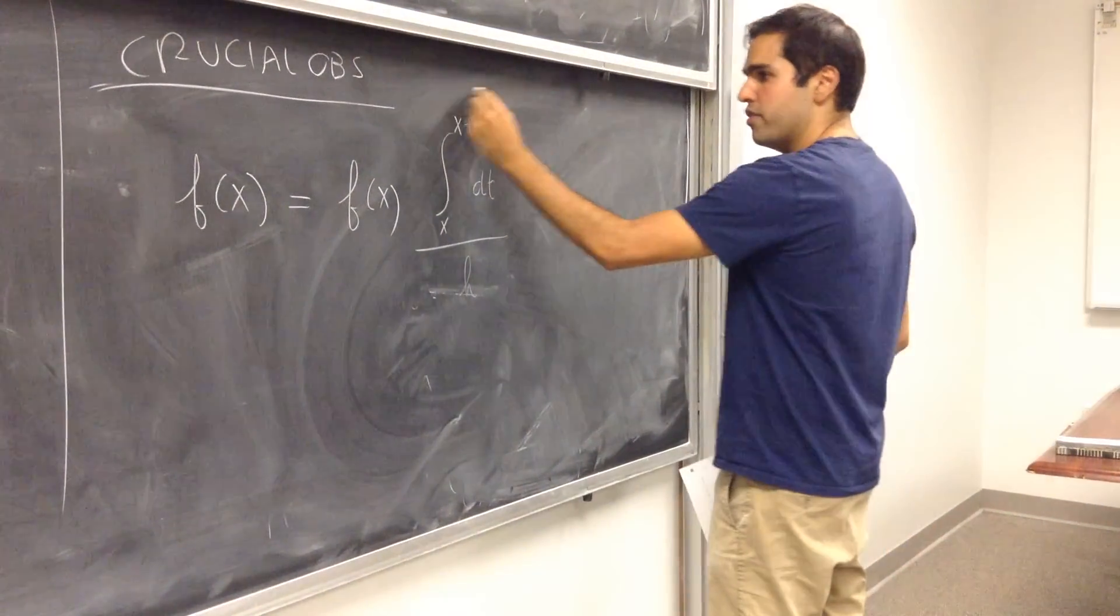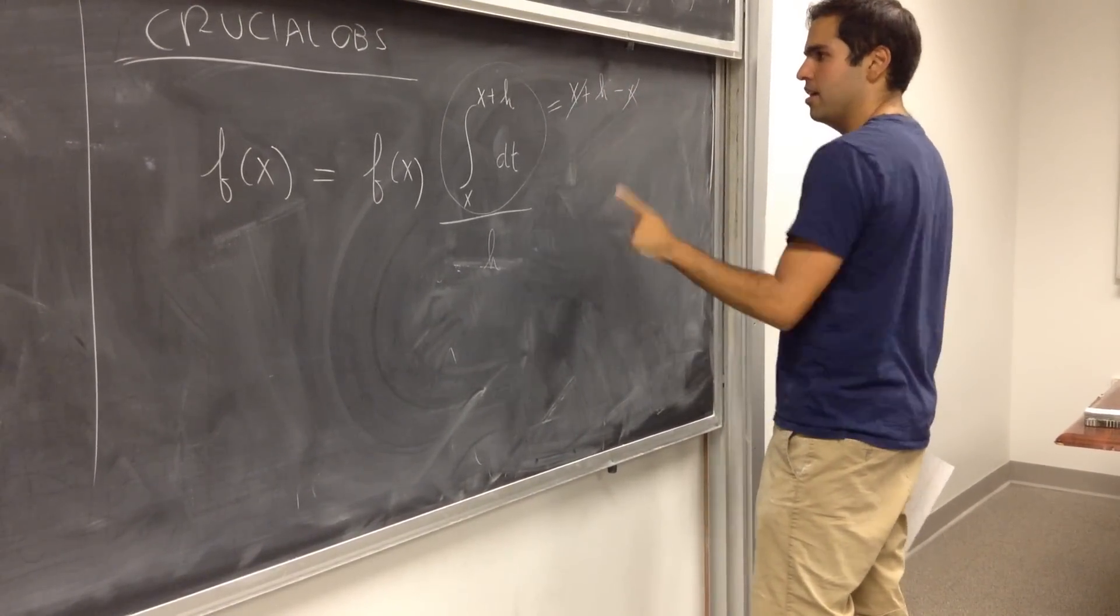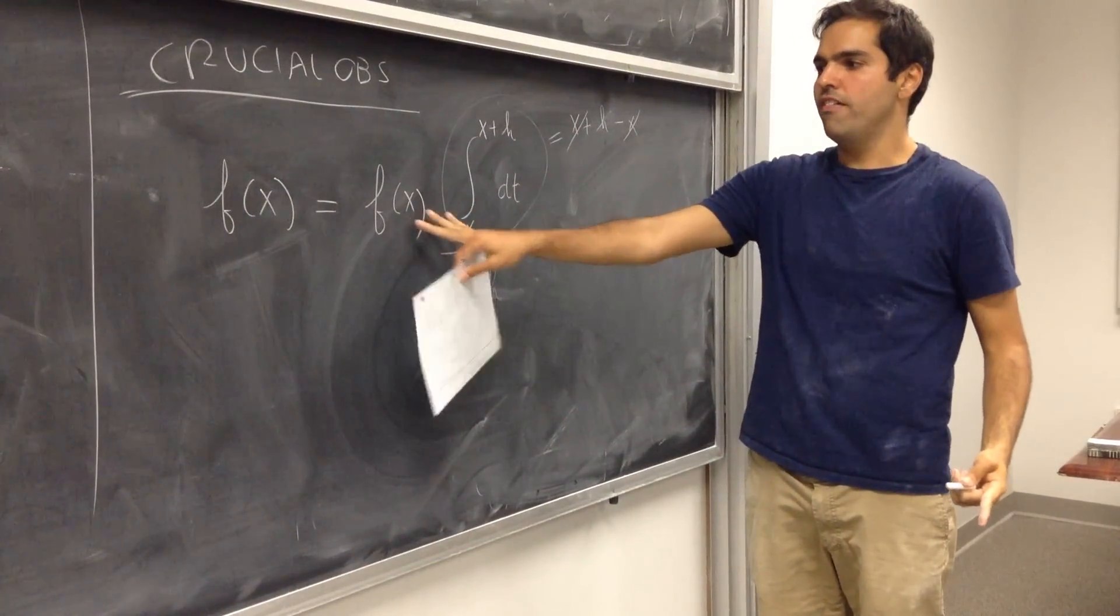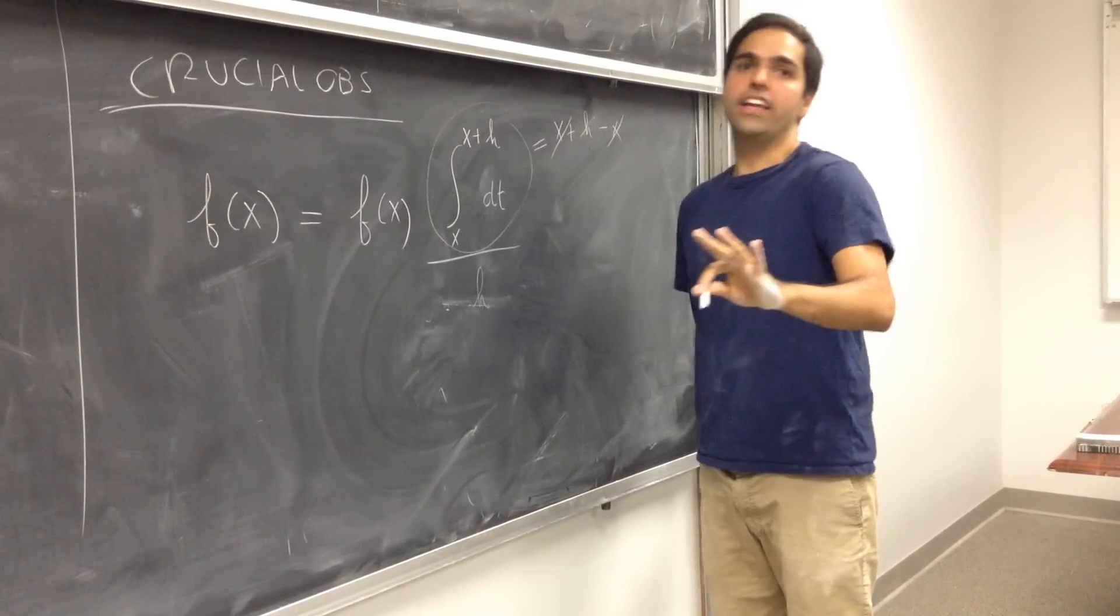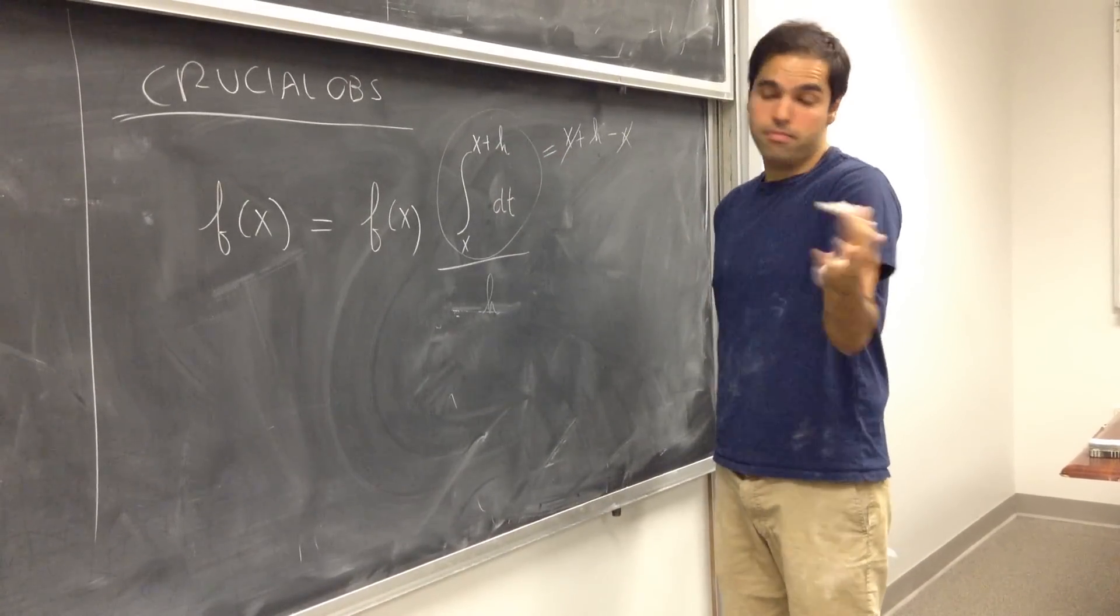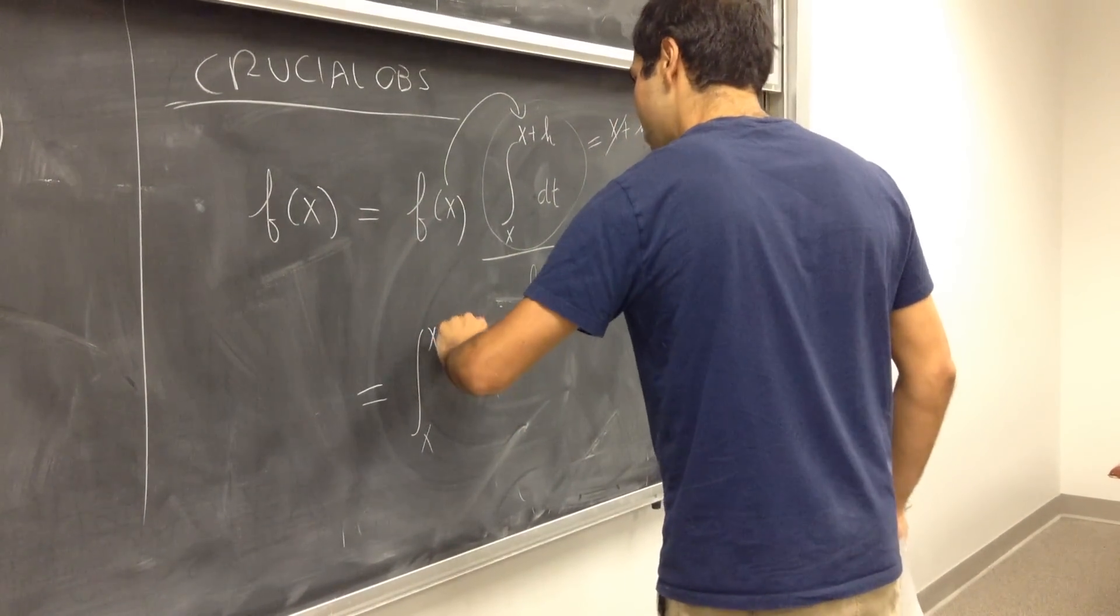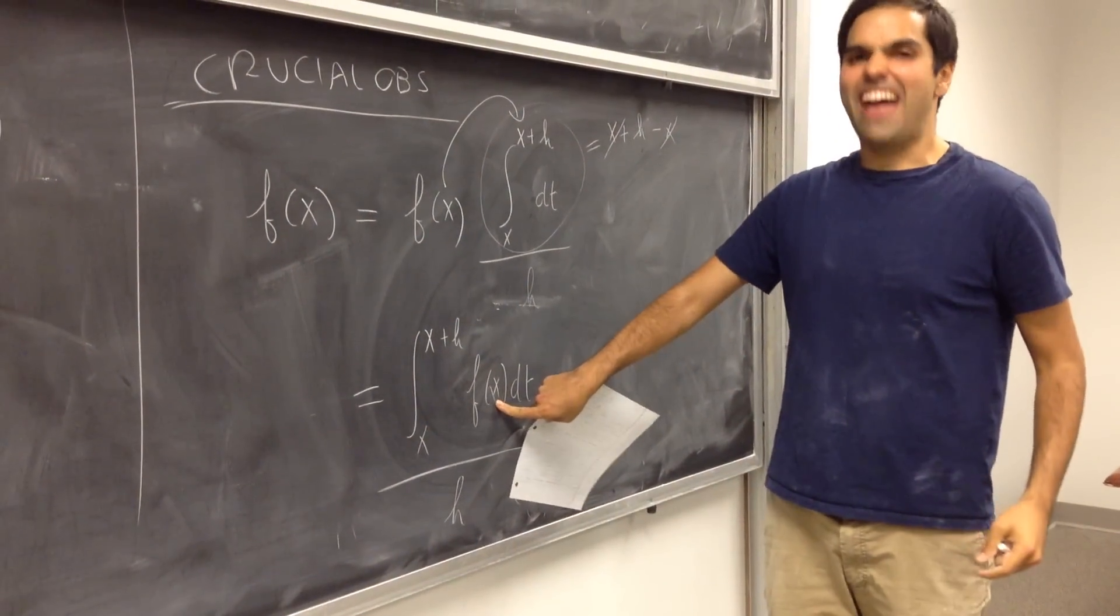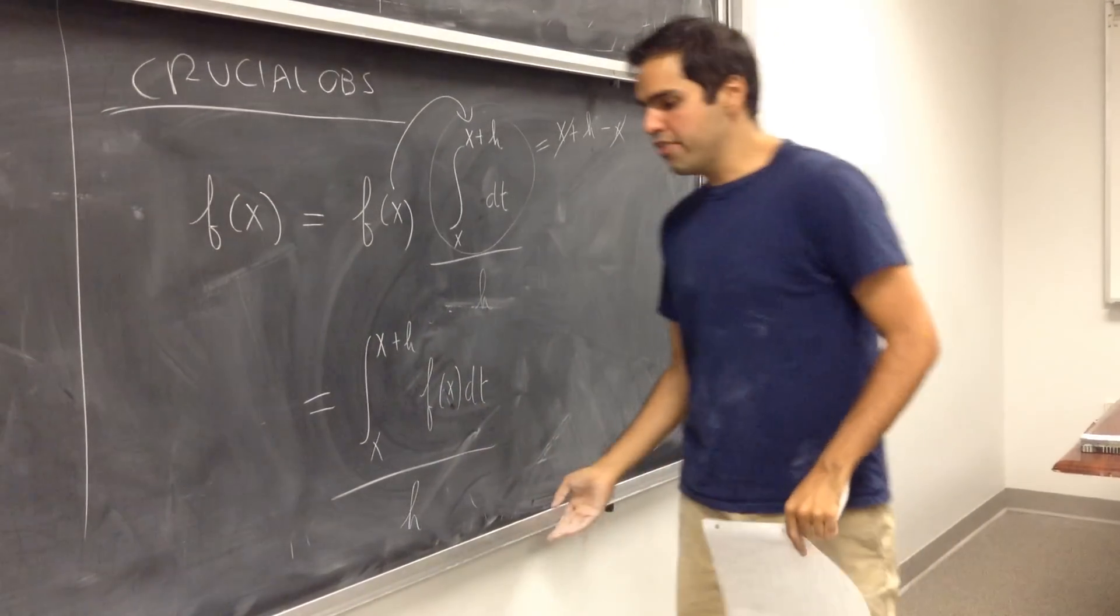And as I said, here comes the crucial observation. Notice the following. f of x, you can write it as follows: f of x times the integral from x to x plus h of one dt over h. And why is that true? Because if you calculate this integral, that's the integral of one, and that should be equal to x plus h minus x. This integral equals to h, if you divide it by h, it equals to one. If you multiply this by f of x, it equals to f of x. By the way, you might say, hey, I used the fundamental theorem of calculus here. No, I did not. This just follows from the definition of the Riemann integral.